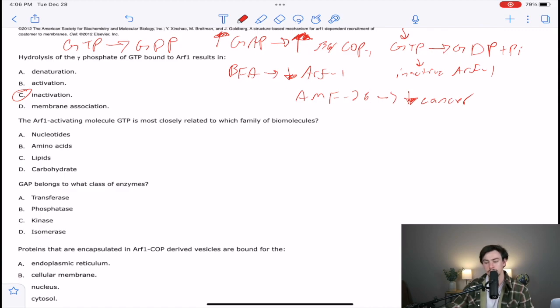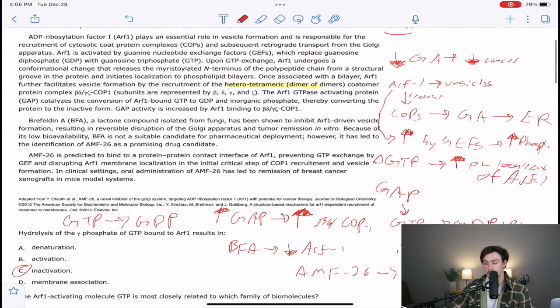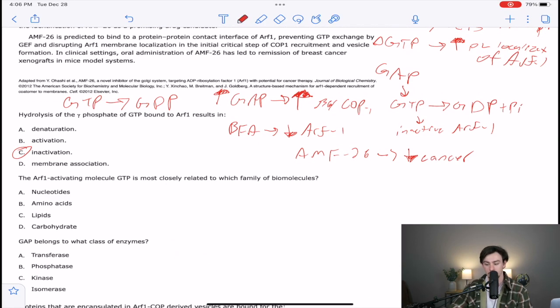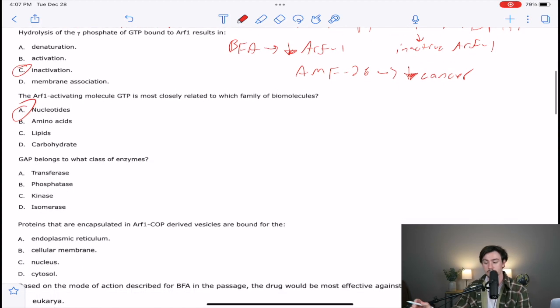The second one says, the ARF1 activating molecule GTP is most closely related to which family of biomolecules? So what type of biomolecule is GTP? GTP is guanosine triphosphate. They even lay it out for us in the passage, which is going to be a nitrogenous base, like a DNA base, attached to three phosphates. And so, looking at A, are nucleotides in GTP? Yeah, it's part of the guanosine. So maybe A. B, is there an amino acid in that? No, nitrogenous bases nor phosphates are not examples of amino acids, lipids, or carbohydrates, but they are examples of nucleotides.